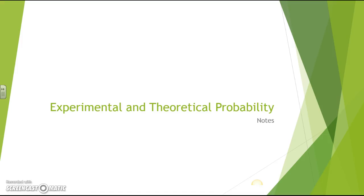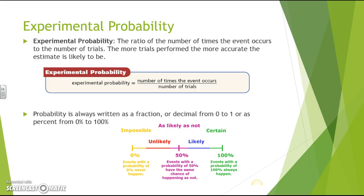This lesson is on experimental and theoretical probability. The first probability we'll work with is experimental. Experimental probability is the ratio of the number of times the event occurs to the number of trials — so the number of times an event occurs compared to the number of trials.